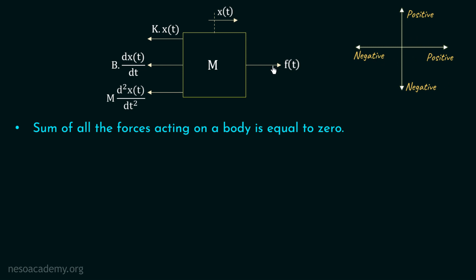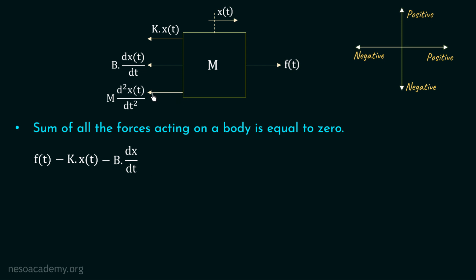Using this sign convention, we can see that force f(t) is directed to the right hand side, so we take it as positive. The restoring force of the spring k·x(t) is directed to the left hand side, so we take it as negative: minus k·x(t). Similarly, the opposing force of friction is directed to the left hand side, so it is negative: minus b·dx/dt. The force due to acceleration is also pointing to the left hand side, so it is negative: minus m·d²x(t)/dt². The sum of all four forces equals zero, giving us the equation of motion: f(t) − k·x(t) − b·dx/dt − m·d²x(t)/dt² = 0.